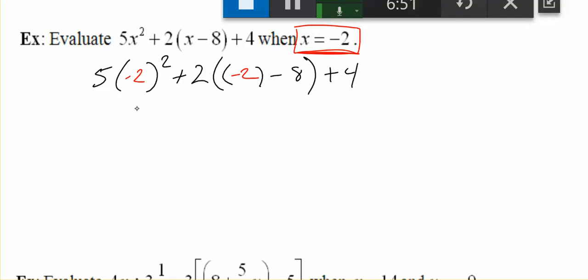The first thing we do in our order of operations is we work within the parentheses. I've got negative 2 minus 8 here. Two negatives: I add them together and keep the sign, so that would be negative 10. So I've got 5 times negative 2 squared plus 2 times negative 10 plus 4. My next order of operations: I still have parentheses, but there's no operation going on inside the parentheses, so my next thing that I do would be to evaluate my exponent.